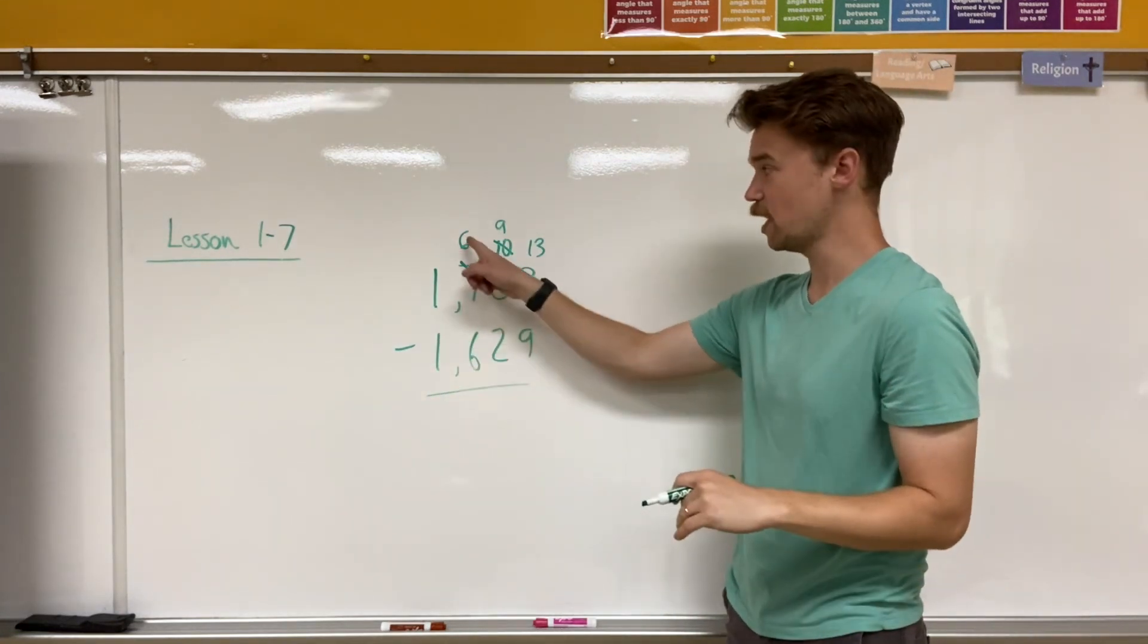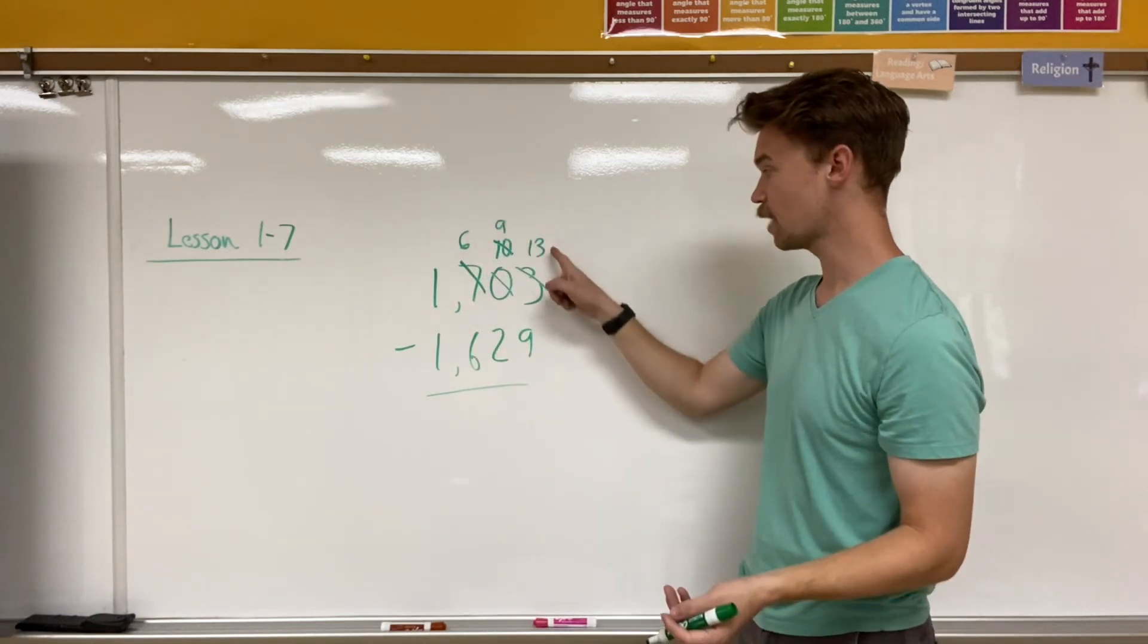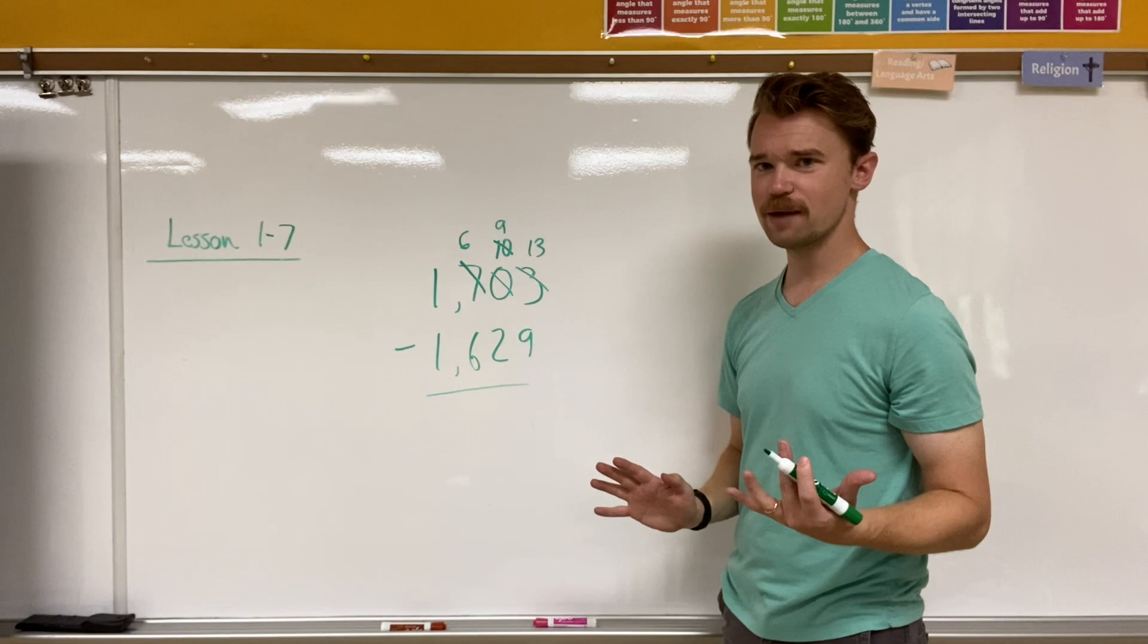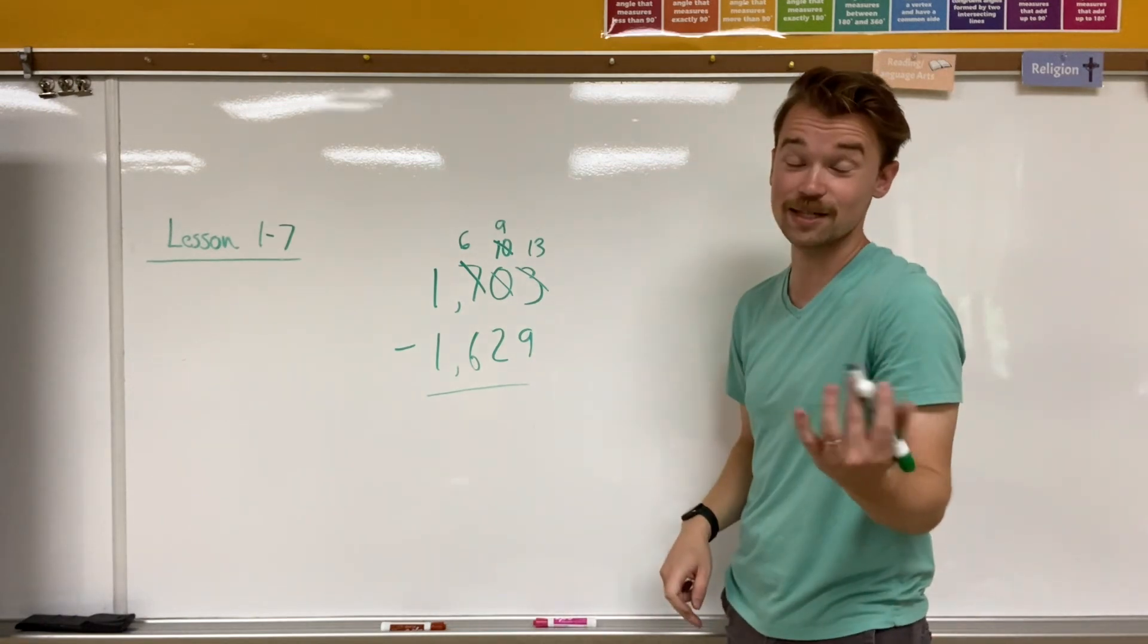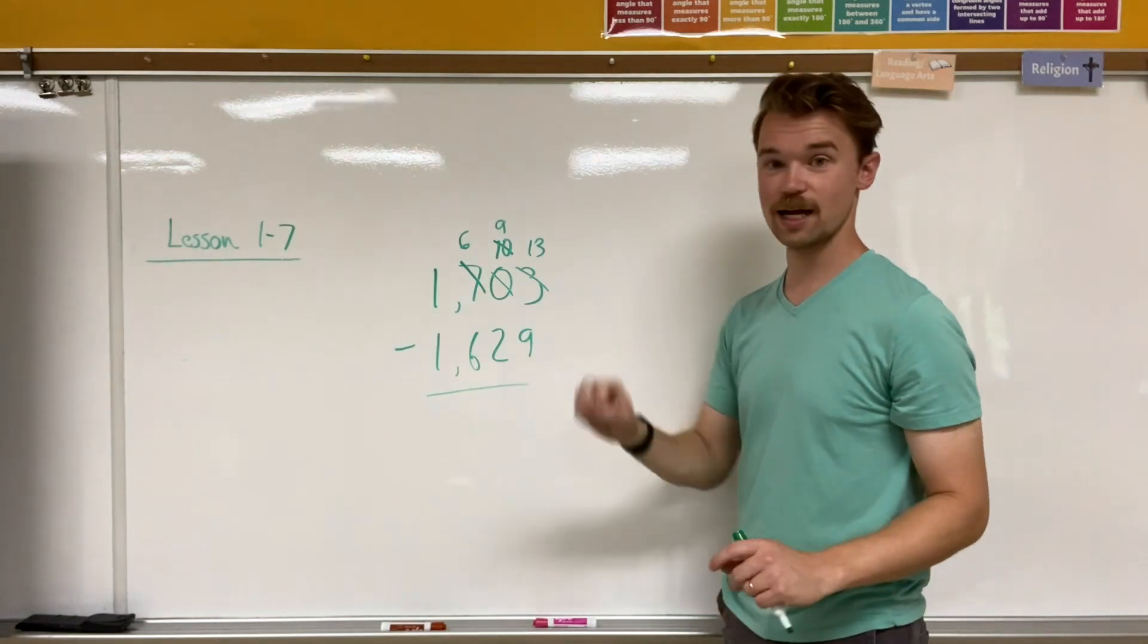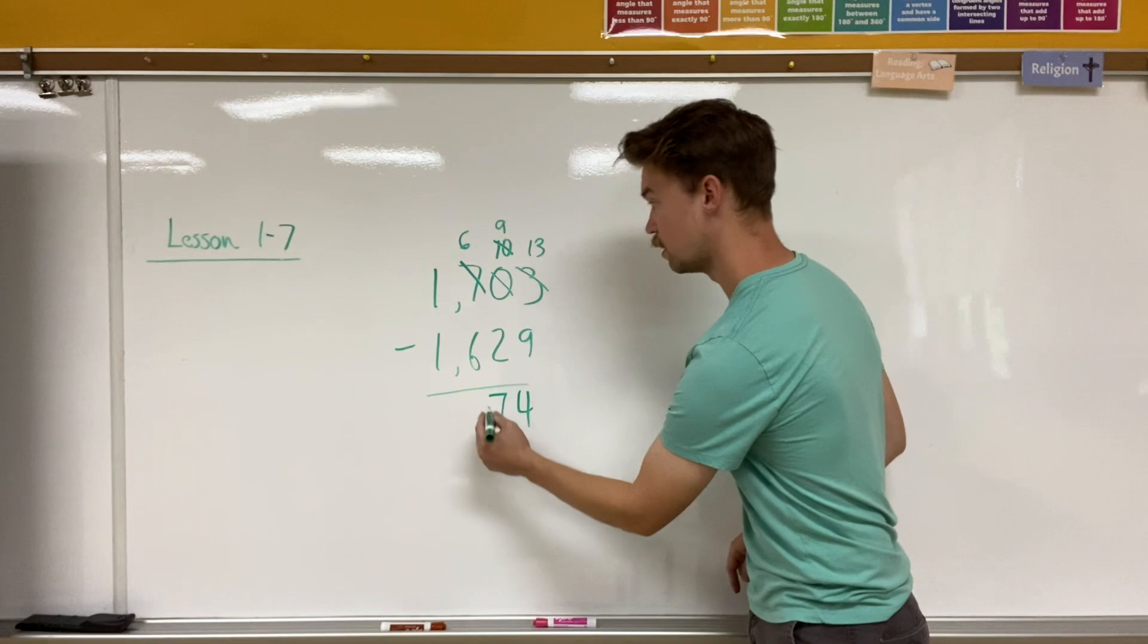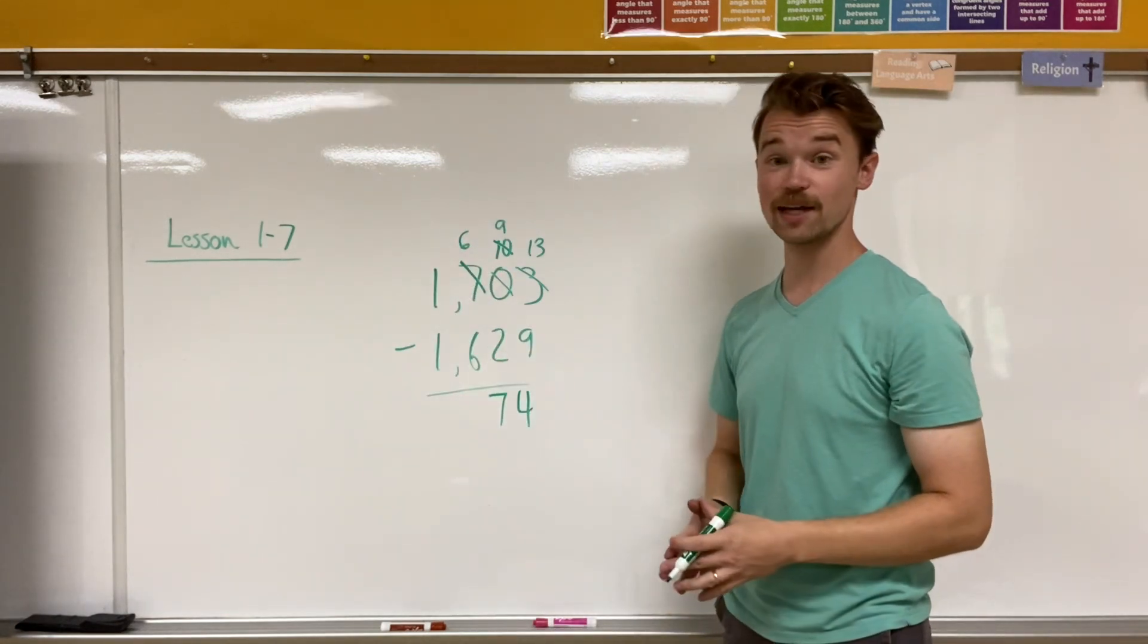One minus one, I can do that. Six minus six, I can do that too. Nine minus two, I can do that. And 13 minus nine, can do that. So if you struggle with subtraction still, I use a count up method when I was in school. So I would start with nine and see how far it gets to 13. But everyone has their own way of doing it. So 13 minus nine, that's nine, 10, 11, 12, 13, that's four. Two to nine, well, that's seven. And six minus six is zero. One minus one is zero. So my answer is 74.